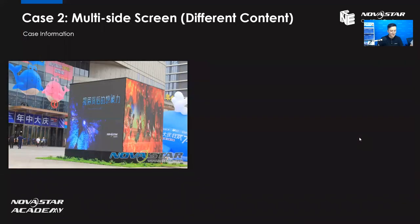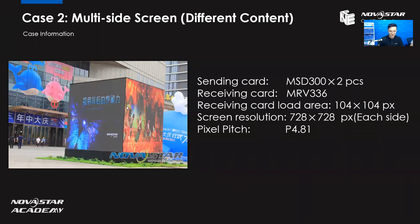That one is very easy. Now let's move on to case two — the multi-sided screen. This case has a four-sided screen. The sending card we use is MSD300, and we're using two of them. The receiving cards are MRV336, and each receiving card loading area is 104 by 104 pixels. Screen resolution is 728 by 728 for each side, so each side has the same pixel resolution.